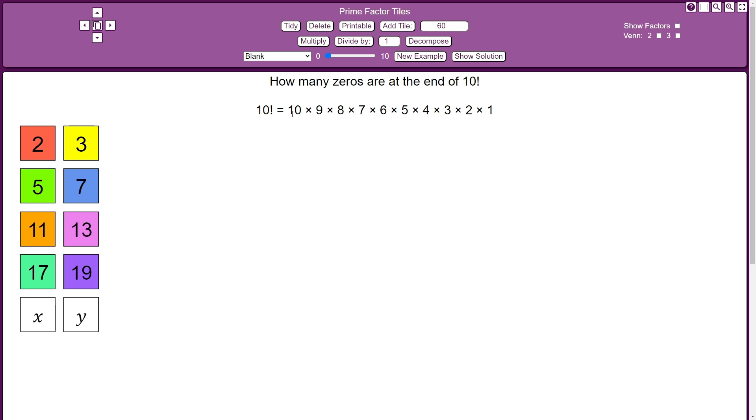So to figure that out, I'm going to take each of these individual factors and decompose it into its prime factors. So 10 would be 2 times 5. 9 is 3 times 3. 8 is 2 times 2 times 2. 7 is prime.